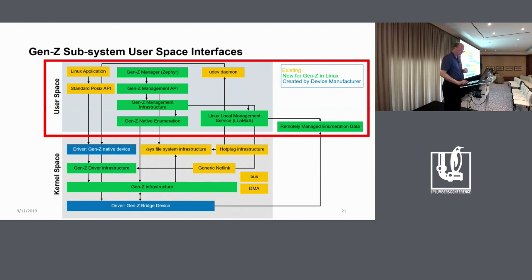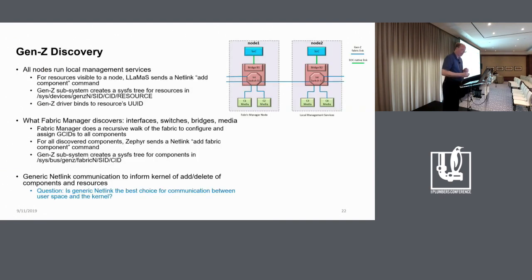I want to talk about the user space pieces and what the kernel subsystem is presenting to user space to make user space management components work better. So as I hinted at earlier, Gen Z discovery is rather different than the way, say, PCI does it, which is all in the kernel and you just explore the PCI hierarchy and you assume that all your devices are local and owned by the OS. So here, every node running an OS instance on the Gen Z fabric needs to run a copy of LAMAS, the local management services process.